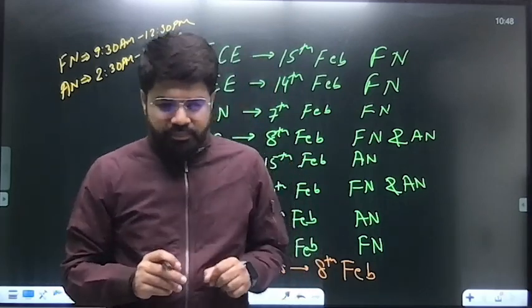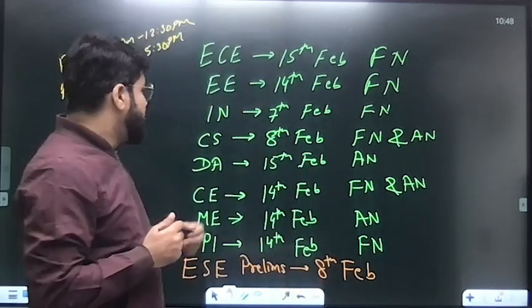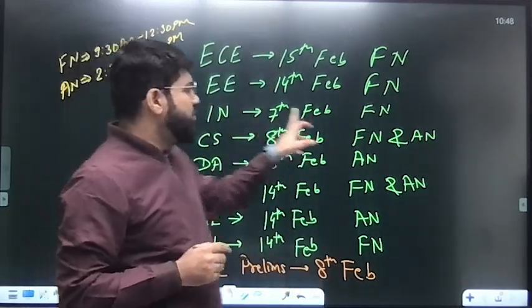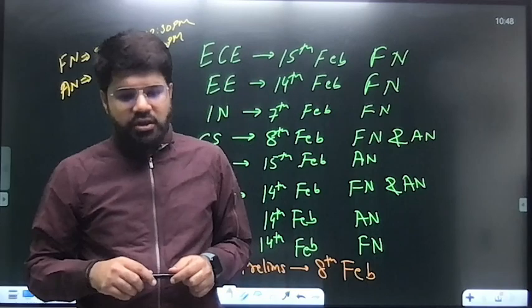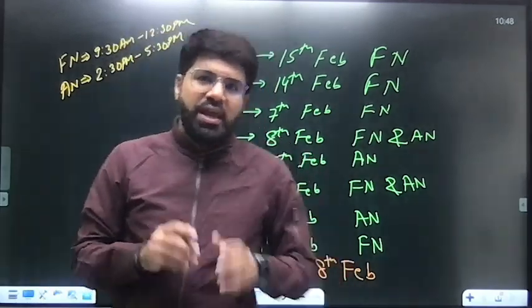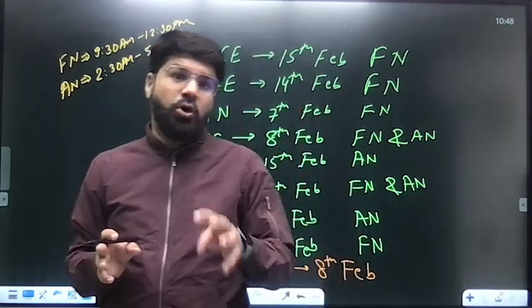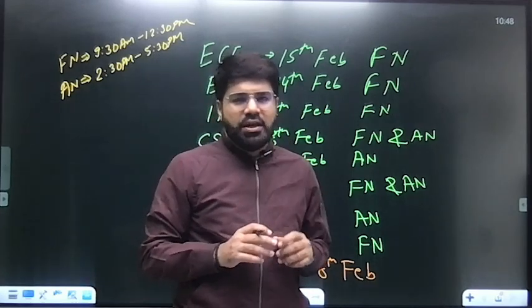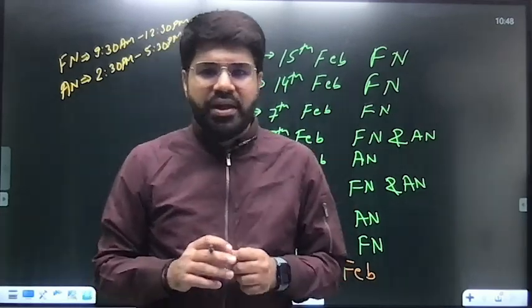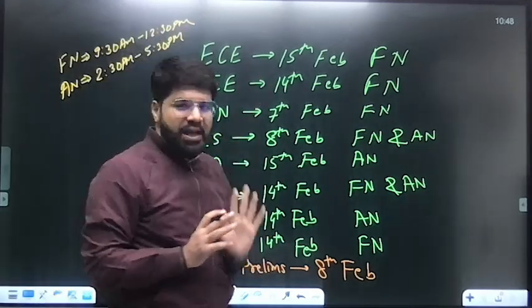Many EC and EE aspirants fill up Instrumentation as the second paper, as a secondary paper. The Instrumentation is 7th February in the forenoon slot. That means if there is an EC or EE aspirant who also wanted to give IN paper seriously and also wanted to give Engineering Services, they are of course in a little unfavorable situation right now, but at least the core papers they have avoided.